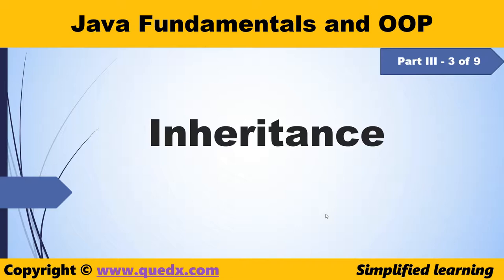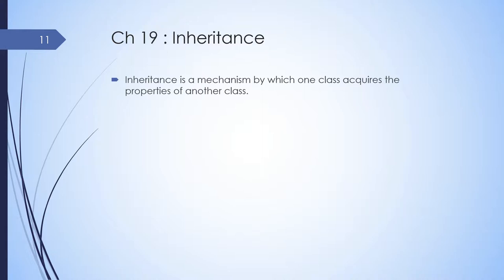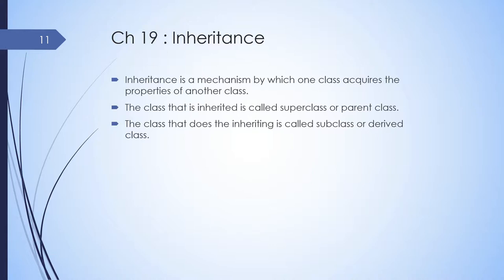In this chapter, we will be learning about inheritance with respect to OOP. Inheritance is a mechanism by which one class acquires the properties of another. The class that is inherited is called superclass or the parent class. The class that does the inheriting is called the subclass or the derived class. Throughout this chapter, we will be using parent to designate superclass and derived to signify subclass. The subclass holds an 'is-a' relation with superclass.